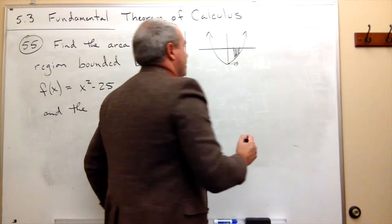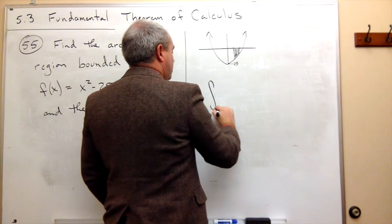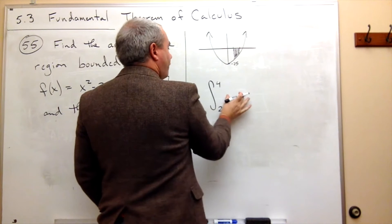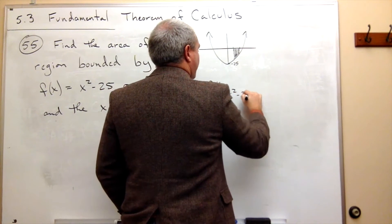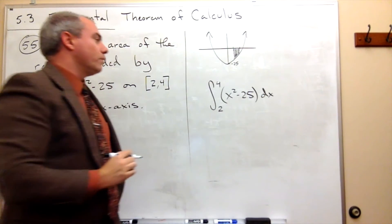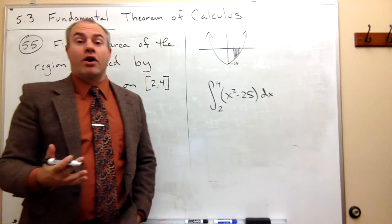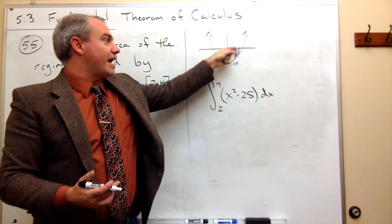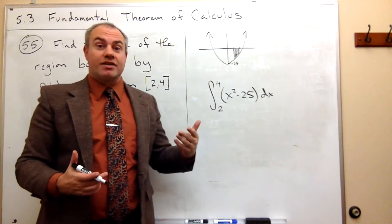If we think that it's above, we might set up something like this. We might say, let's integrate this from 2 to 4 and then just put our function in here, which is x squared minus 25 dx. We might say, let's compute our area this way. Well, this would be wrong because this is going to be calculated as negative area because it's below the x-axis, not as positive area.